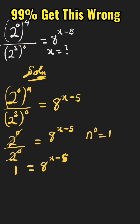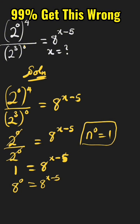Now, going back to the law of indices where n raised to the power of 0 is 1, we need to make the bases equal. We change the 1 on the left-hand side to 8 raised to the power of 0, which equals 8 raised to the power of x minus 5.